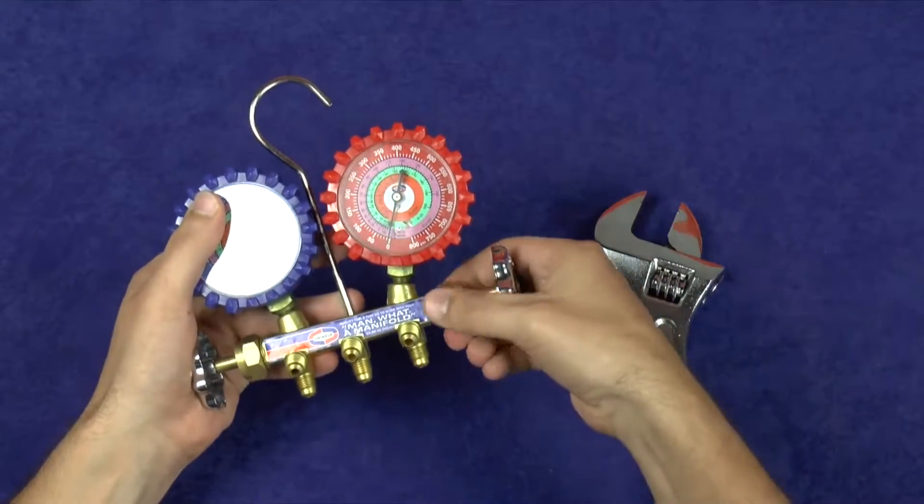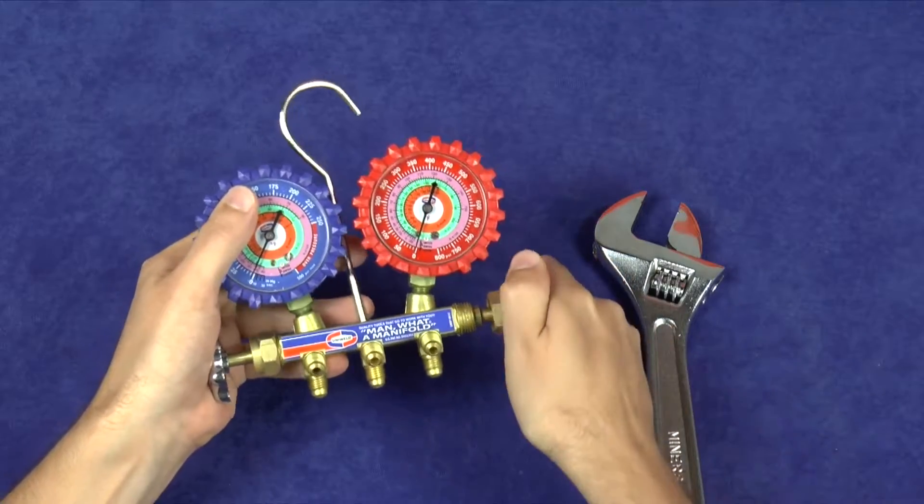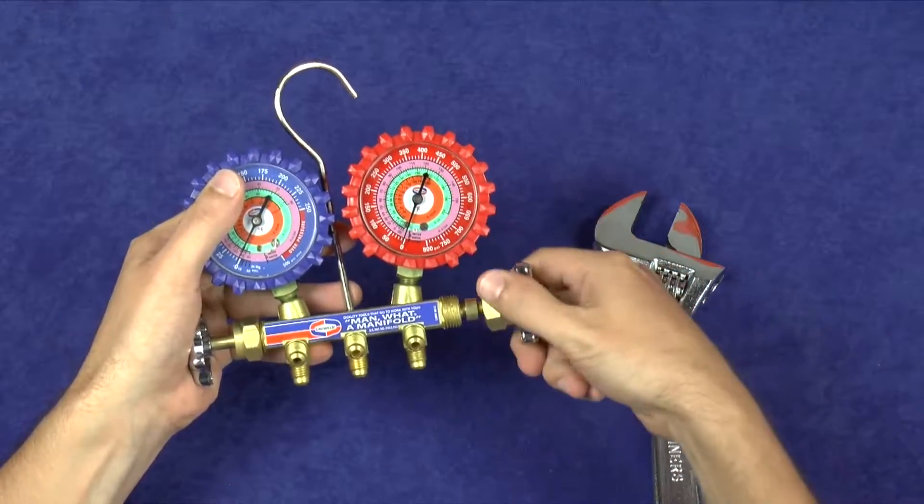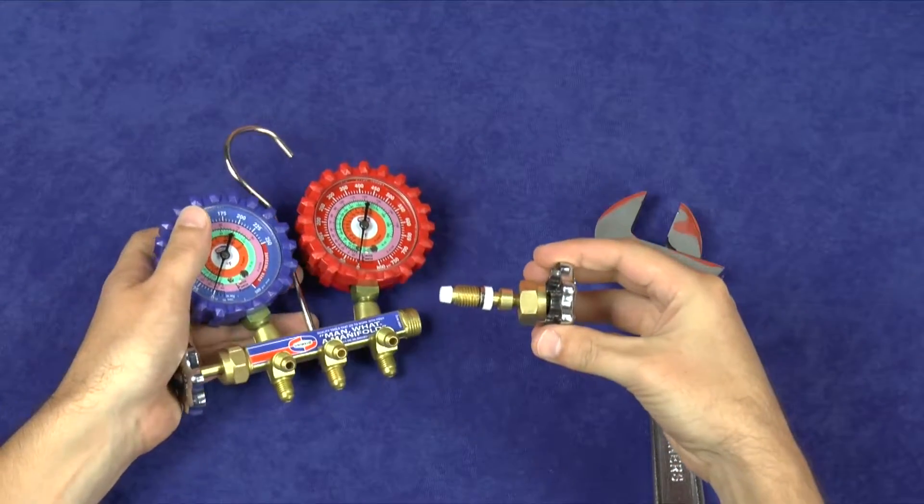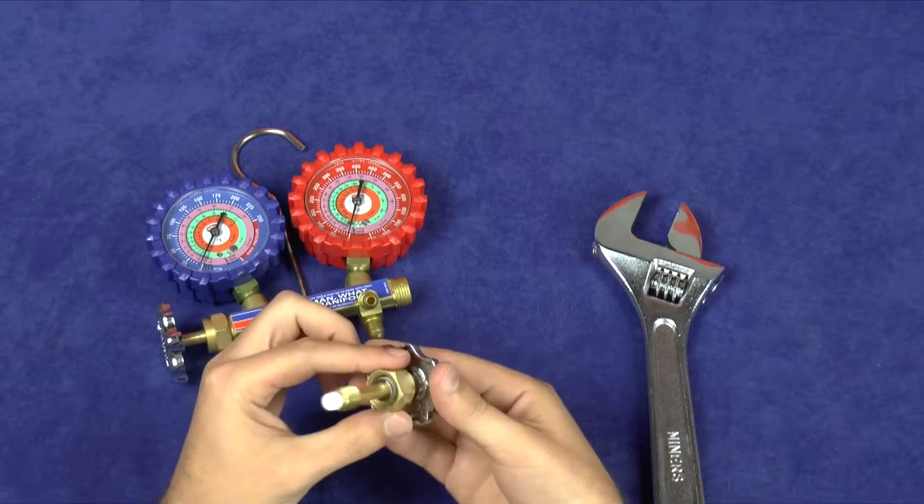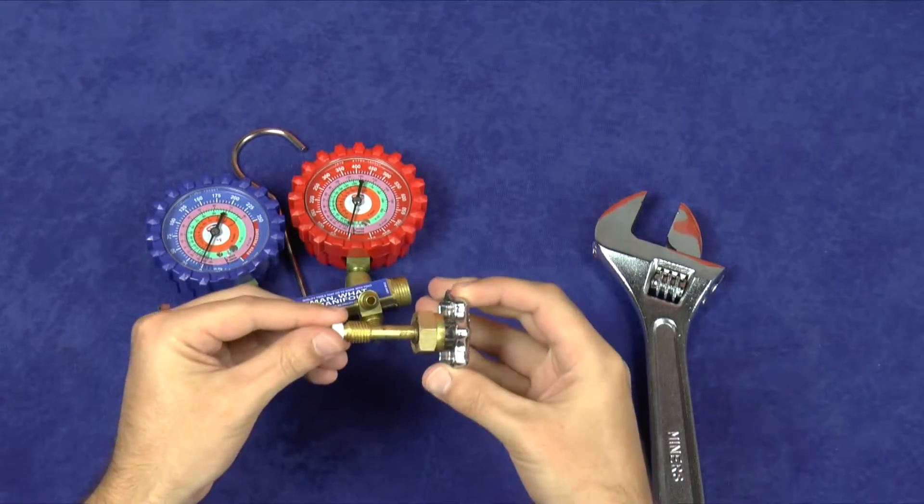Unscrew the brass packing nut and remove the valve stem assembly from the manifold body by turning the metal hand wheel counterclockwise. If any foreign debris has found its way inside, it can score the Teflon and prevent it from sealing properly.